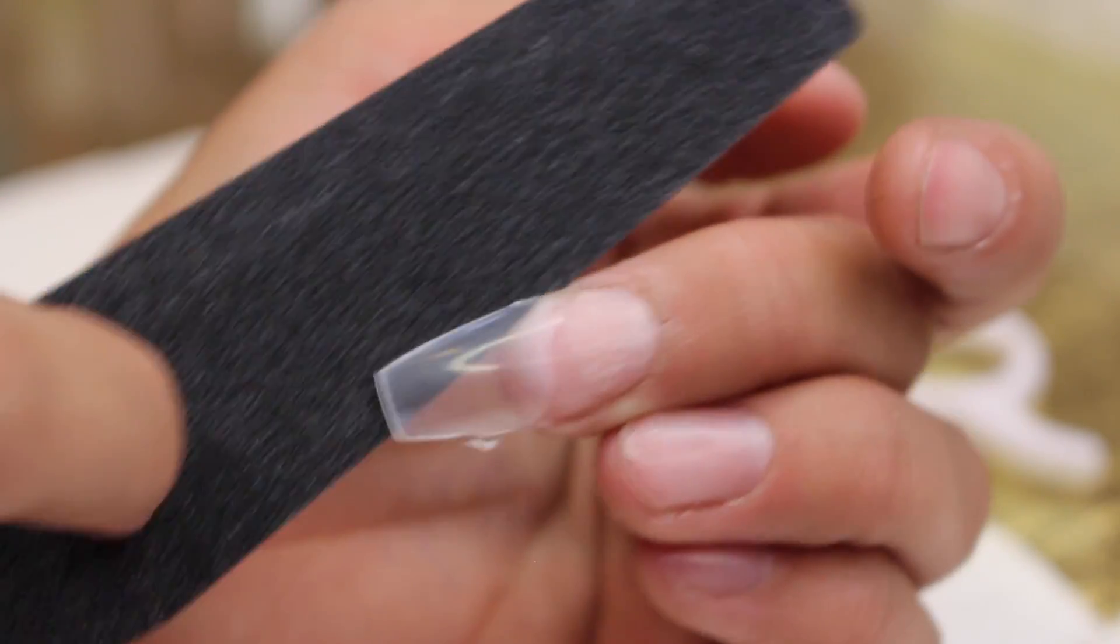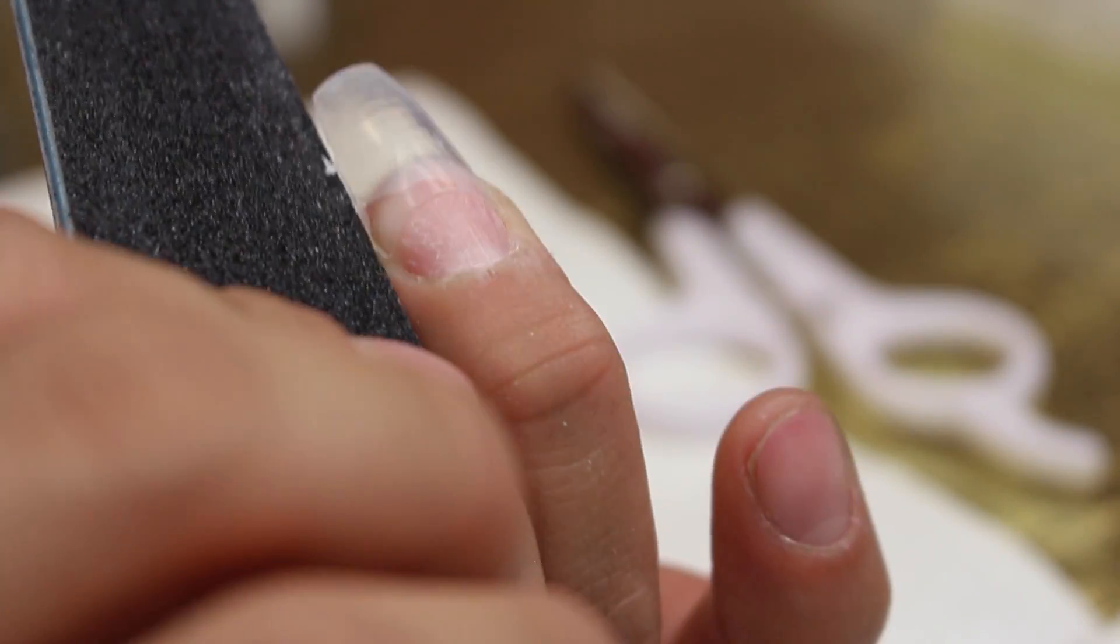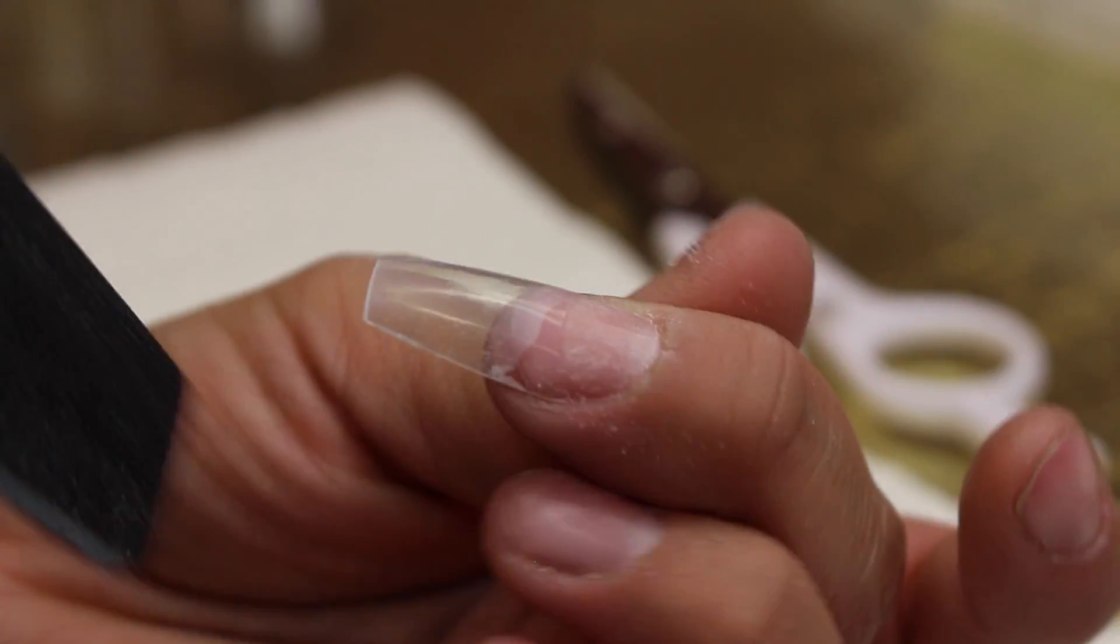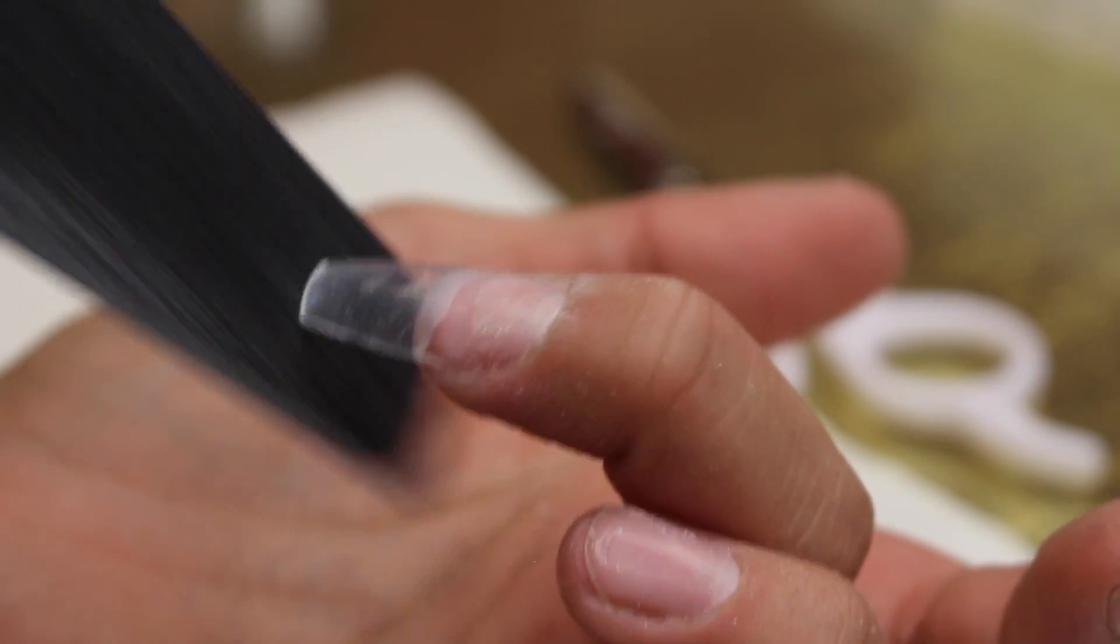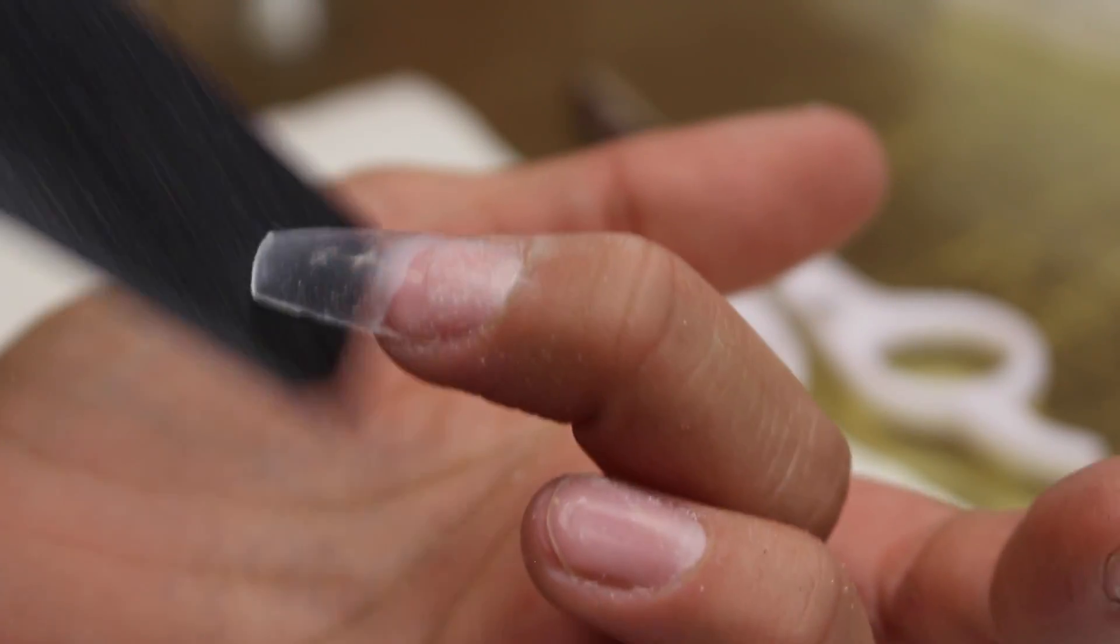You're going to take your file again and just file the sides. Try to get the shape with the file so that you can have less filing time. Then I like to turn my file and just file straight up and down so that you can get that nice flat, crisp coffin edge.